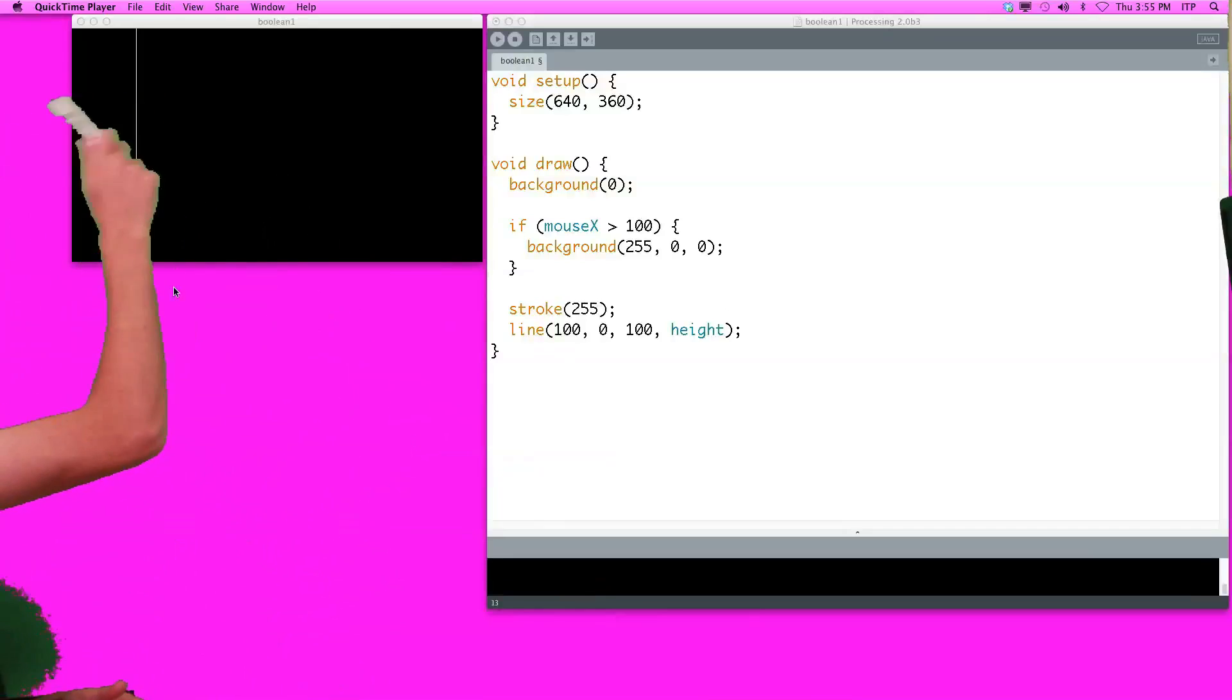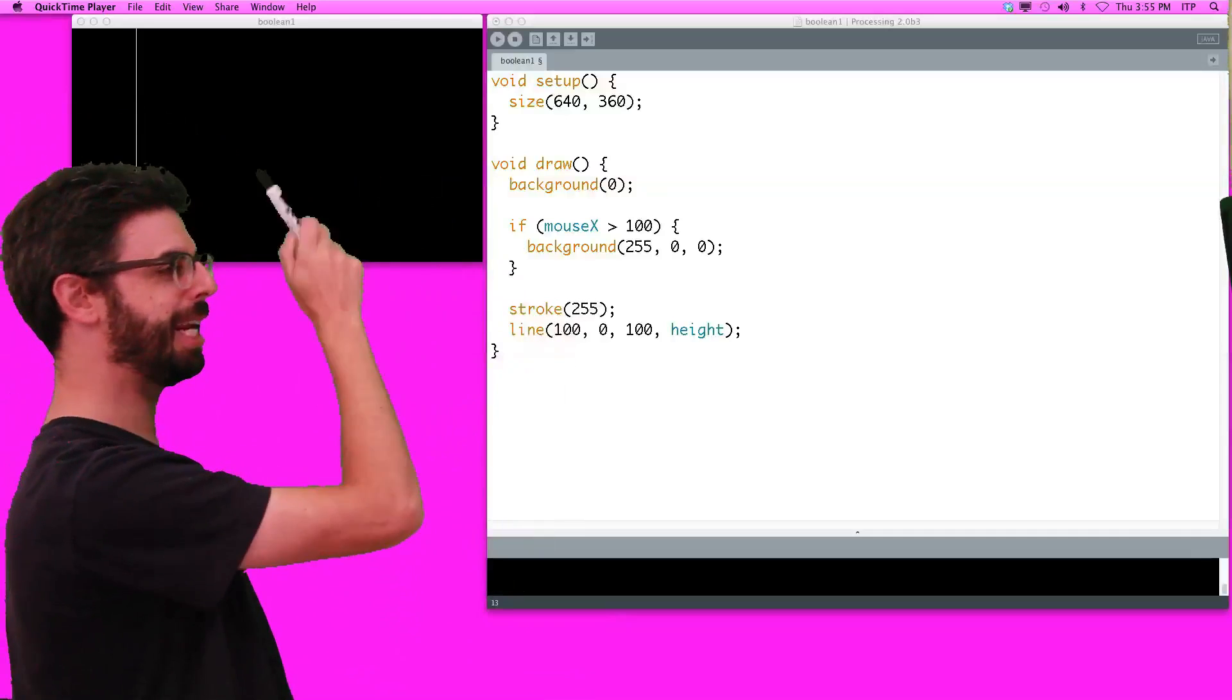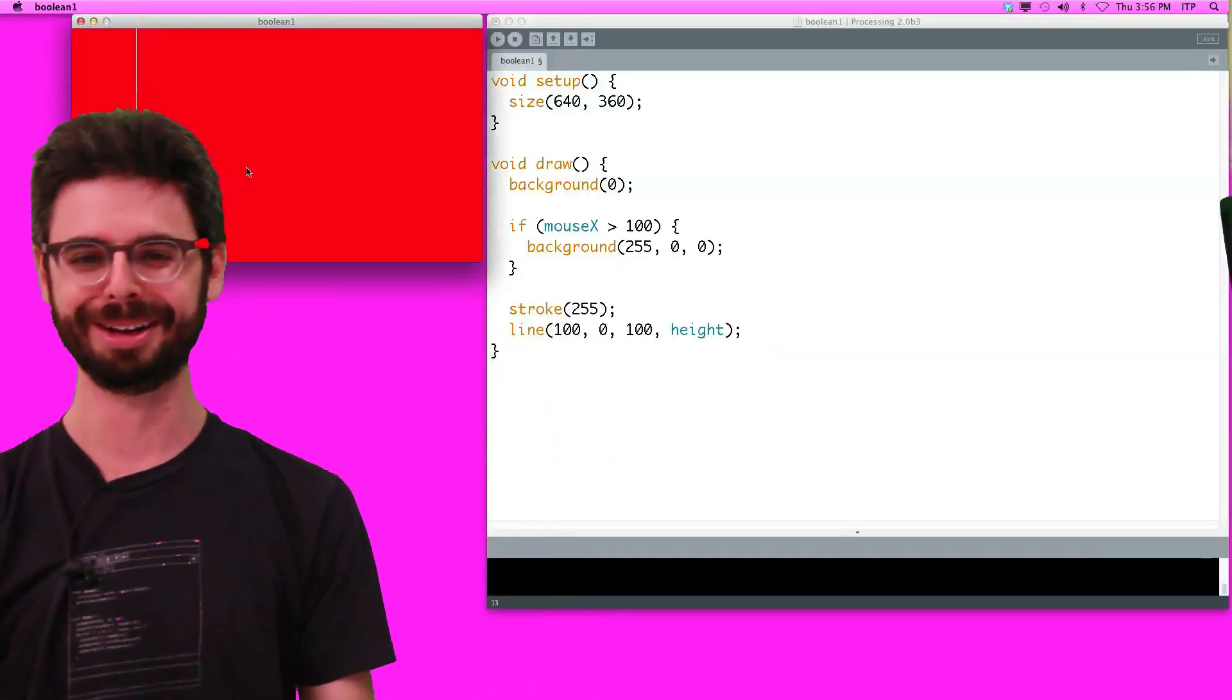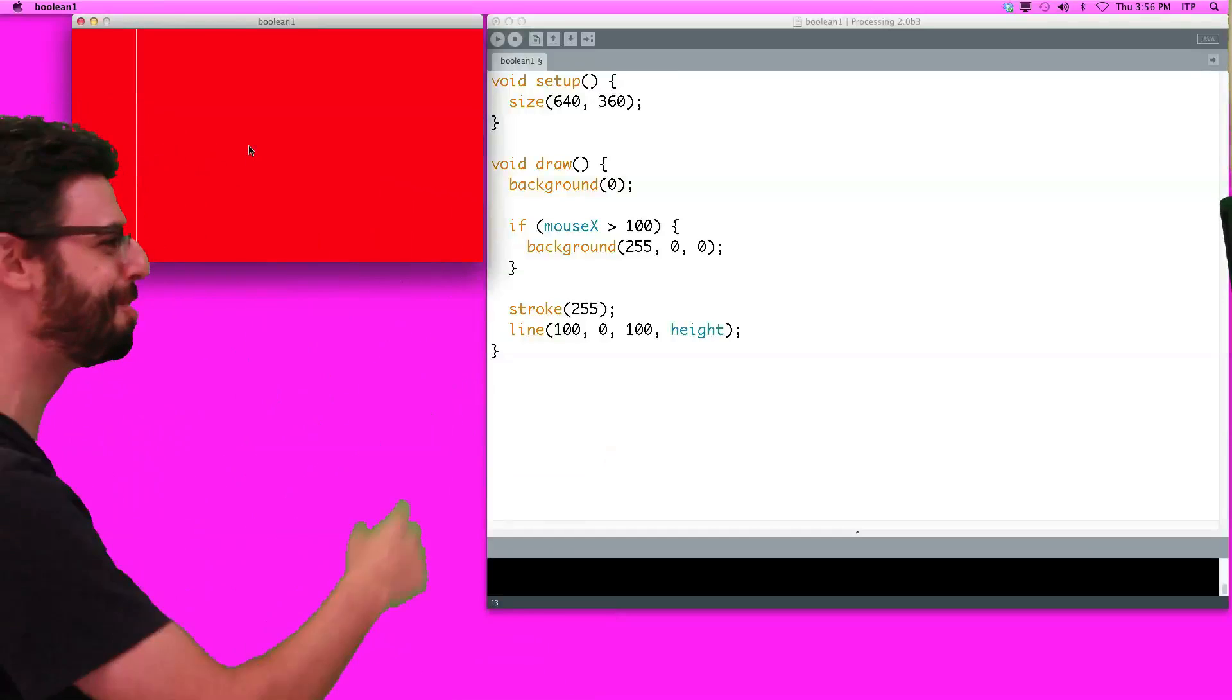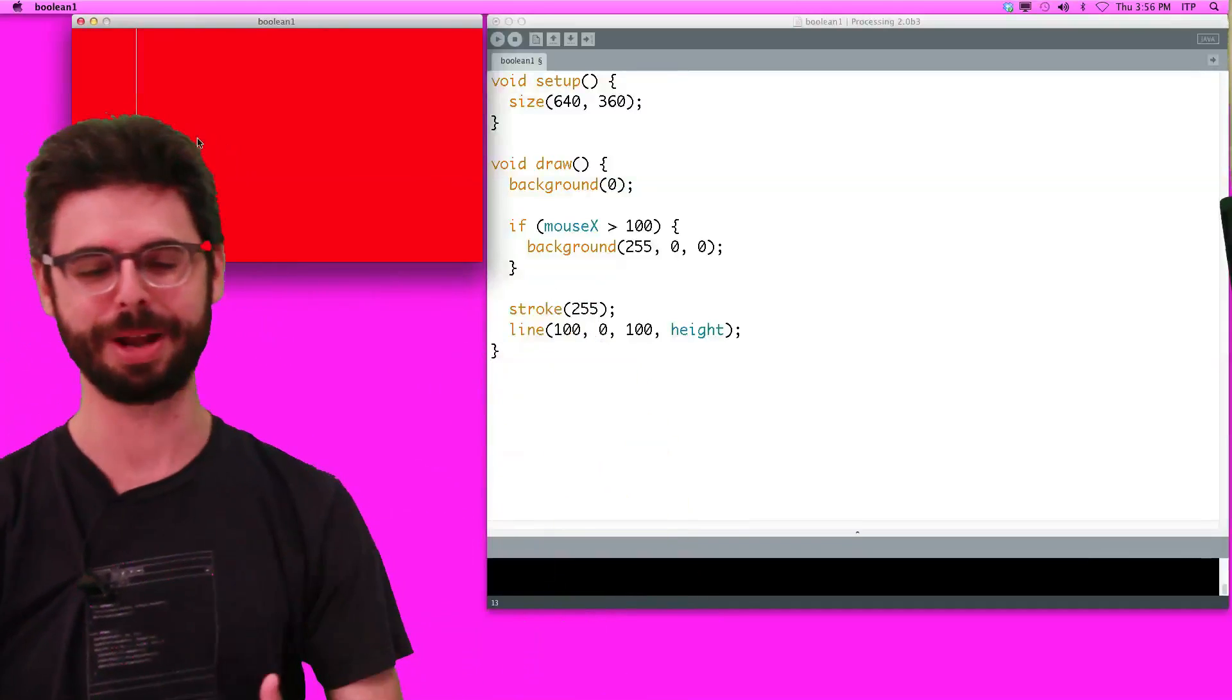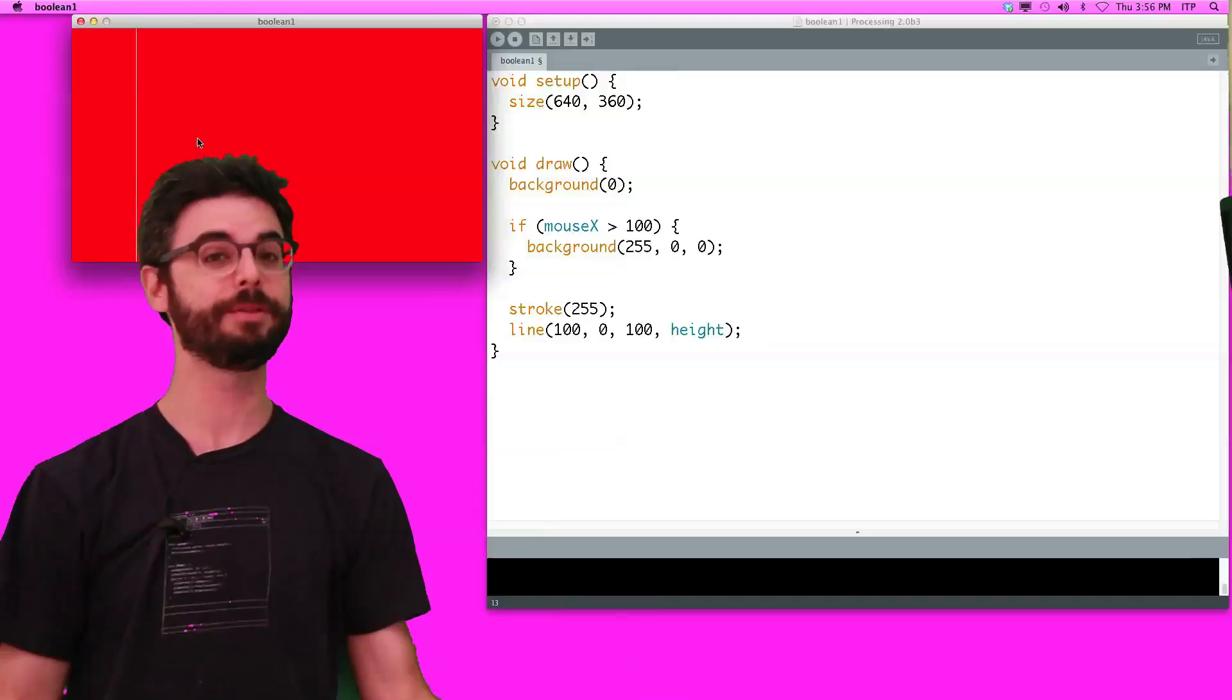There's now a white line over here to show us where the mouse is. If the mouse is over here, it's less than 100 pixels, and it is not executing that code which draws a red background. But as soon as I move the mouse over, as soon as I click it in the window and have it in focus and move the mouse over, we can see we now get a red background. No red background, red background.